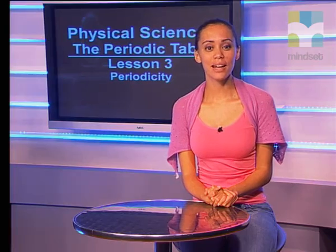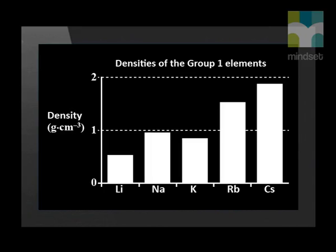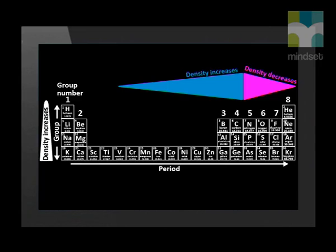Now let us look at how the density changes as we move down a group. As we can see from this graph, the density of the elements increases as we move down the group. We expected this because the volume of an atom increases as extra energy levels are occupied. Here we see how the density changes across the periodic table.